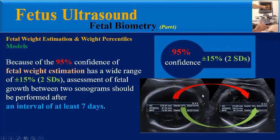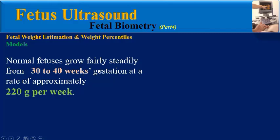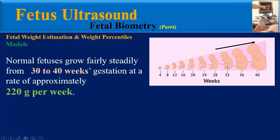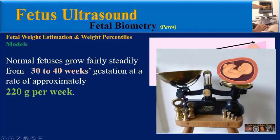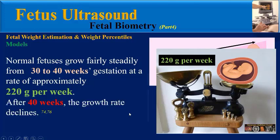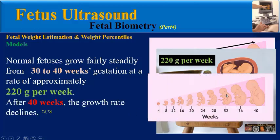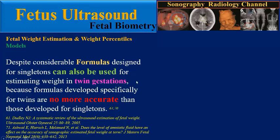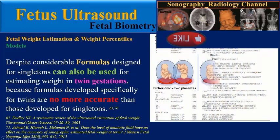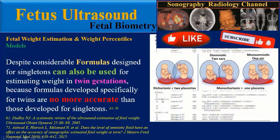Because the 95% confidence interval of fetal weight estimation has a wide range of plus or minus 15%, assessment of fetal growth between two sonograms should be performed after an interval of at least 7 days. Normal fetuses grow fairly steadily from 30 to 40 weeks gestation at a rate of approximately 220 grams per week. After 40 weeks, the growth rate declines.